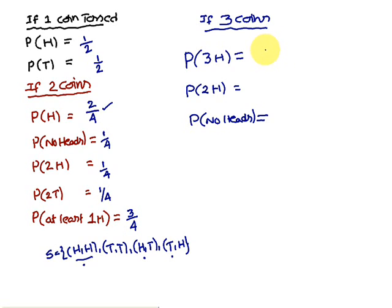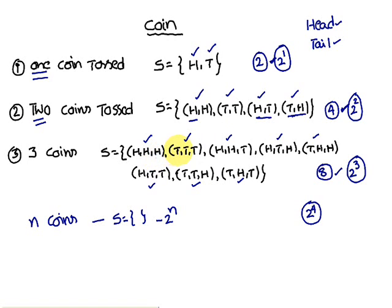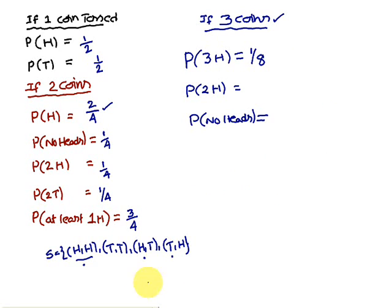If three coins are tossed, probability of getting three heads: three coins give eight elements, only one outcome has all heads, therefore probability is 1/8. For exactly two heads: going through the sample space, three pairs have exactly two heads, therefore probability of two heads is 3/8.